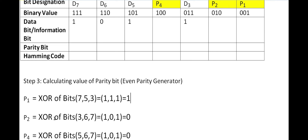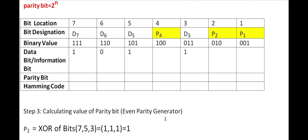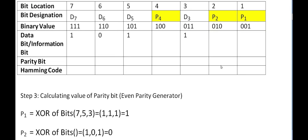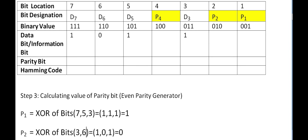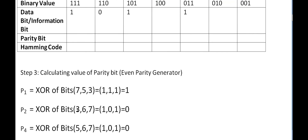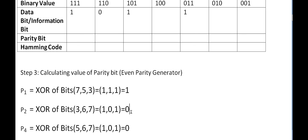Similarly for P2, we look at the middle bit (bit 1) of each position's binary equivalent. Positions having 1 in the middle are: 3 (011), 6 (110), and 7 (111). So we XOR bits at positions 3, 6, and 7. The corresponding values are: position 3 has 1, position 6 has 0, position 7 has 1. We already have two 1's — an even count — so P2 generates 0. P2 = 0.